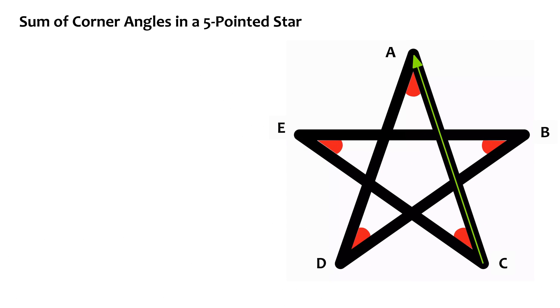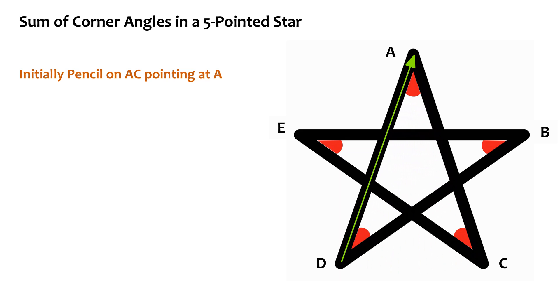Now we can also find this out with an arrow method. Let's place an arrow going along one side of the pentagram. If we want to see it practically, we can place a pencil on one of the sides of this star — being careful not to mess up with the direction of the pencil. Let's start by placing the pencil on AC, pointing at A. Let's now rotate it through A so as to make it lie on AD — we see its arrow is pointing to A.